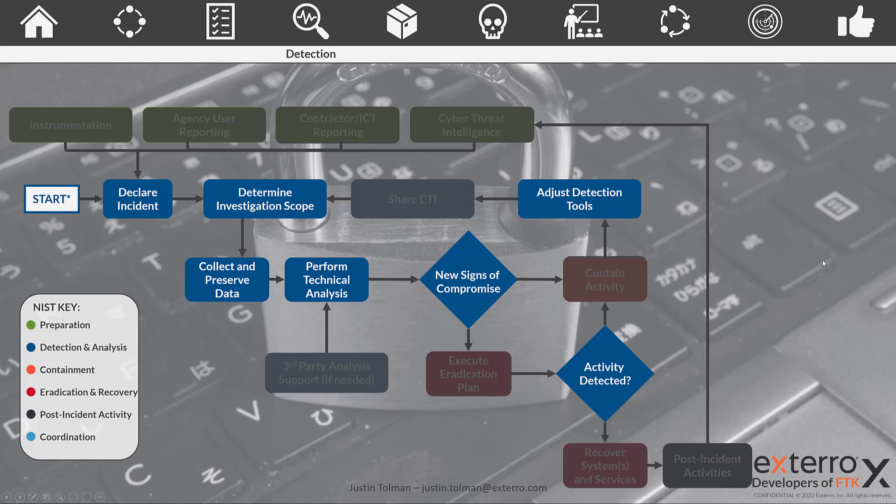I'm going to darken out what's not going to apply here. You can see: declare an incident, determine investigation scope, then collect and preserve our data, perform analysis on that data. Once we've performed our analysis, we continue to look for new signs of compromise. If we detect that activity, we continue to perform actions, and once we no longer detect activity, we adjust our tools and the sequence continues.